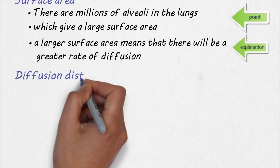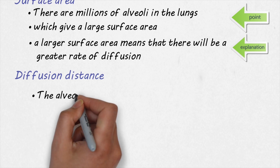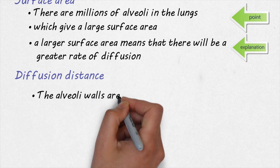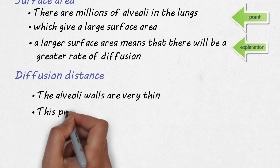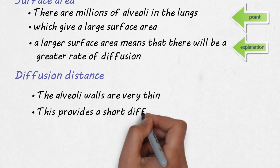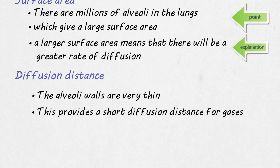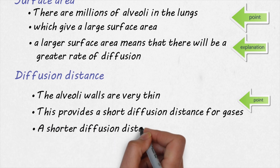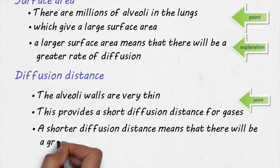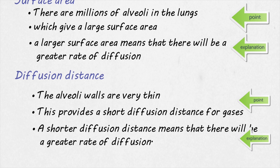The next point is about diffusion distance. The alveoli have very, very thin walls, and this enables oxygen and carbon dioxide to diffuse in or out of the blood very easily. So the point is: the alveoli walls are thin, which provides a short diffusion distance. The explanation is: a shorter diffusion distance means that there will be a greater rate of diffusion of gases.